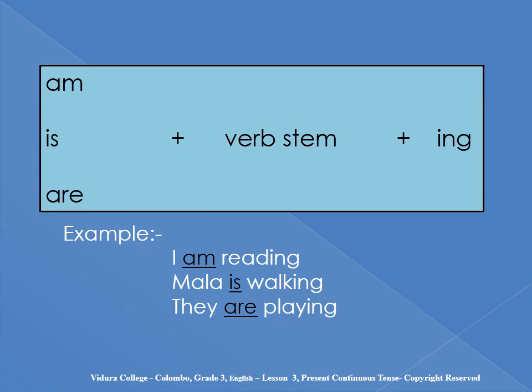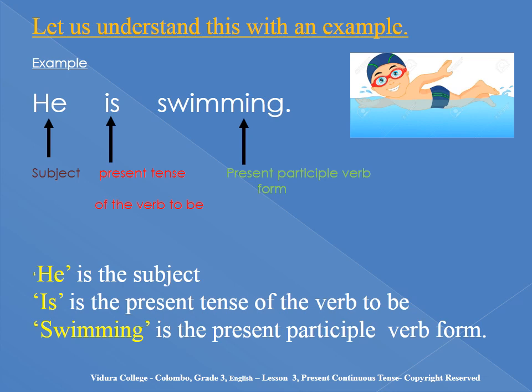See the examples: 'Mala is walking.' 'They are playing.' You can see the helping verbs am, is, are. We can't write a sentence in present continuous tense without a helping verb. Let's understand: 'He is swimming.' He is the subject, 'is' is the present tense of the verb to be, and 'swimming' is the present participle verb form.